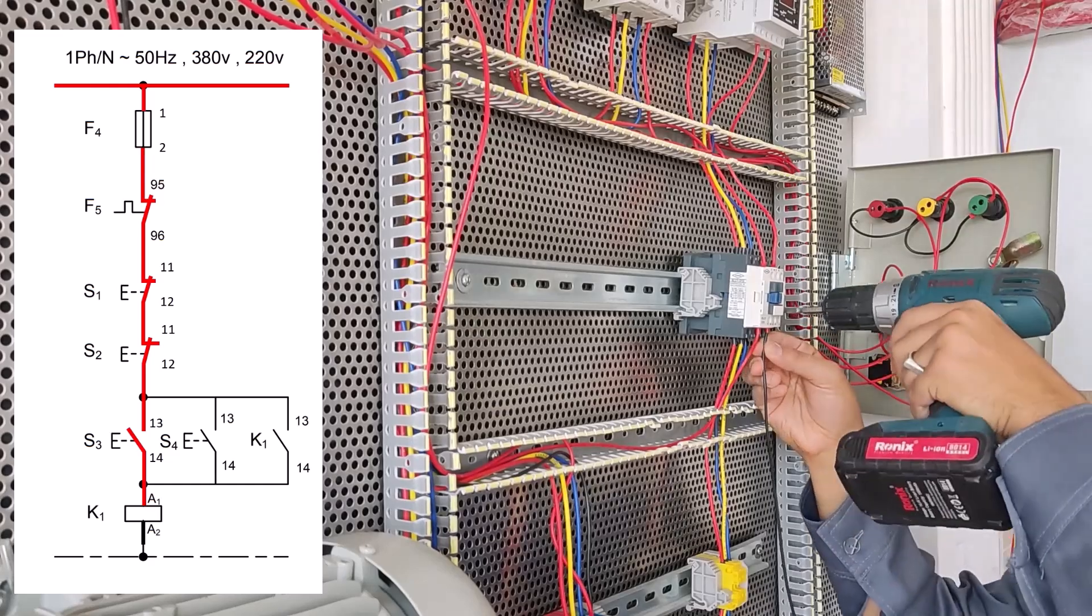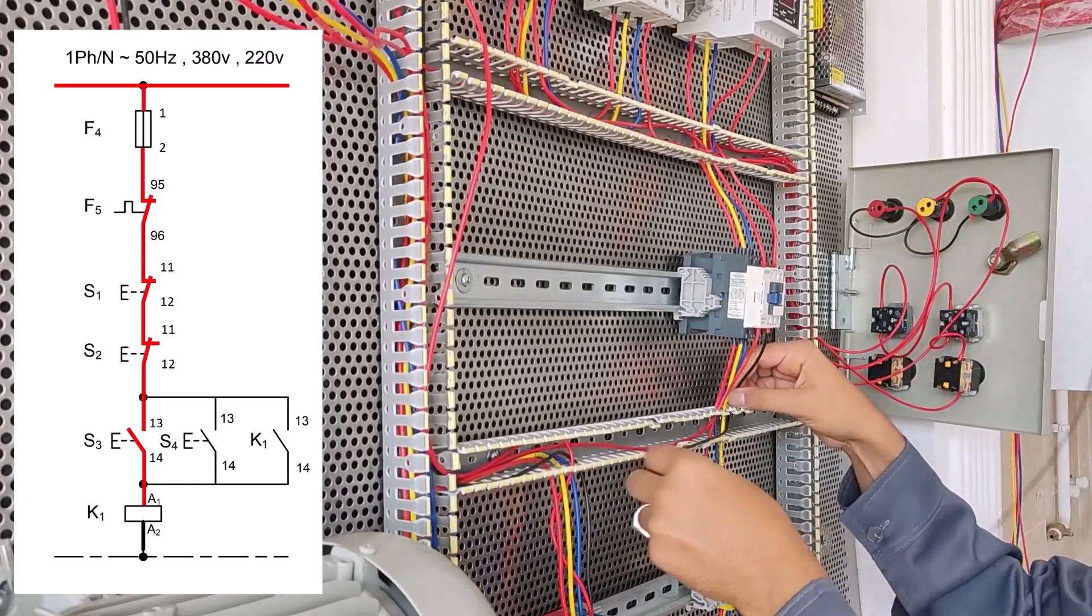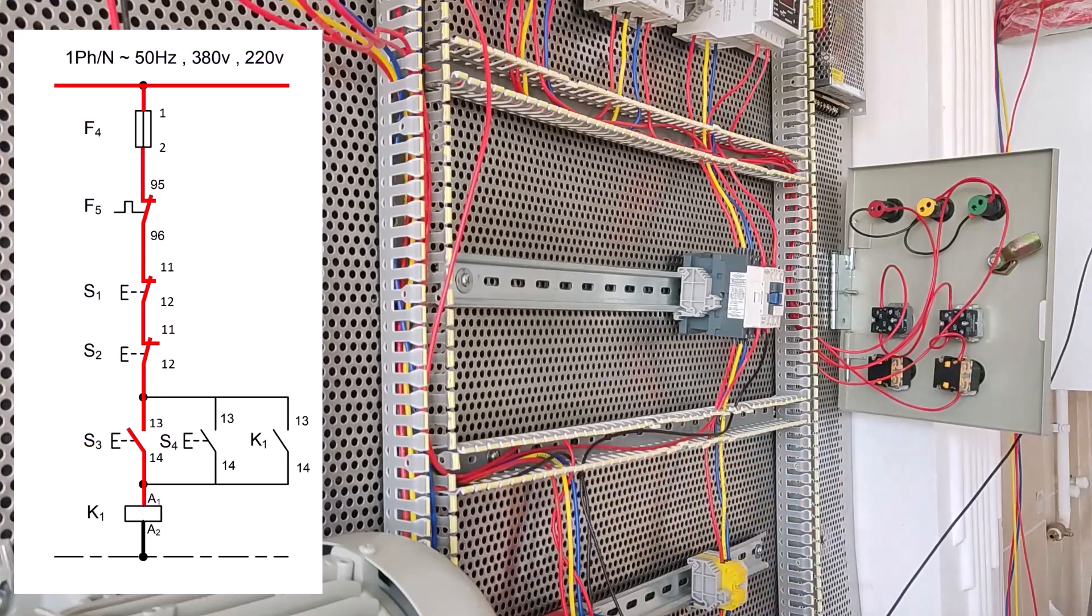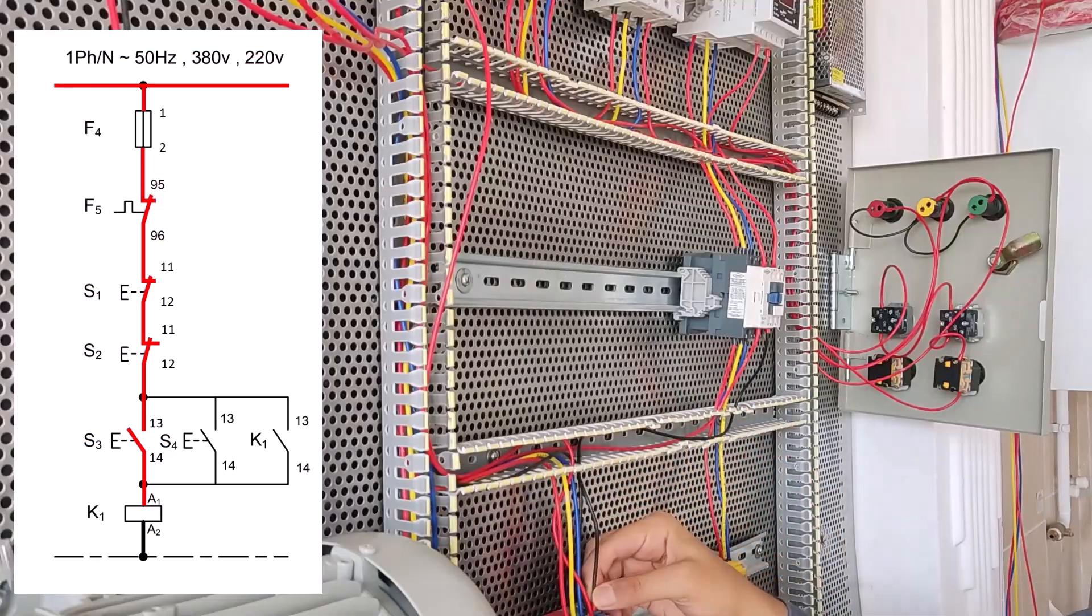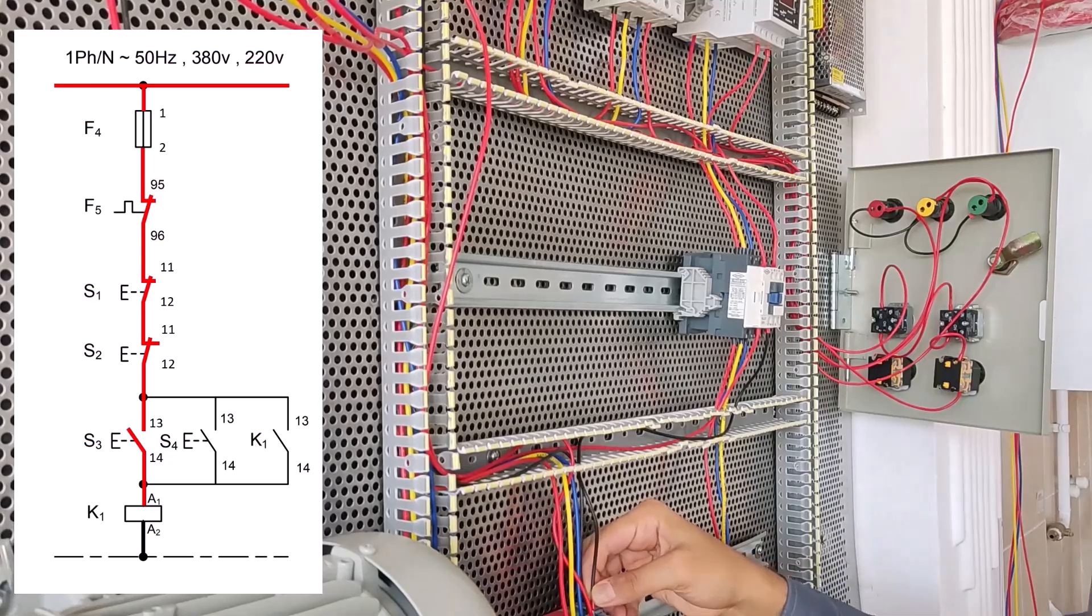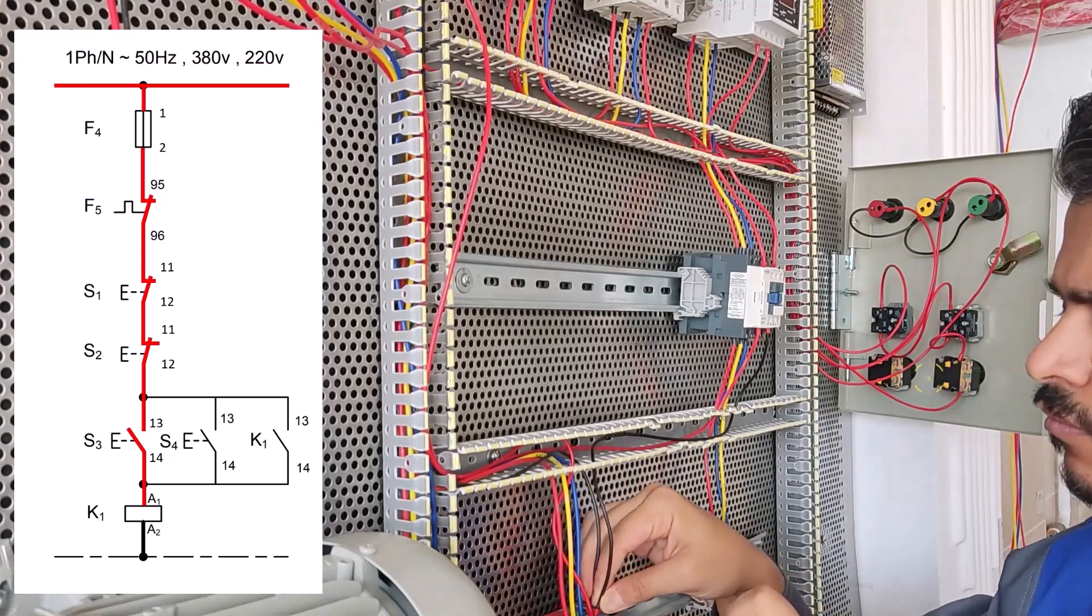Now we connect the A2 conductor K1 to the zero terminal. As you can see the diagram on the left, it's the black line.